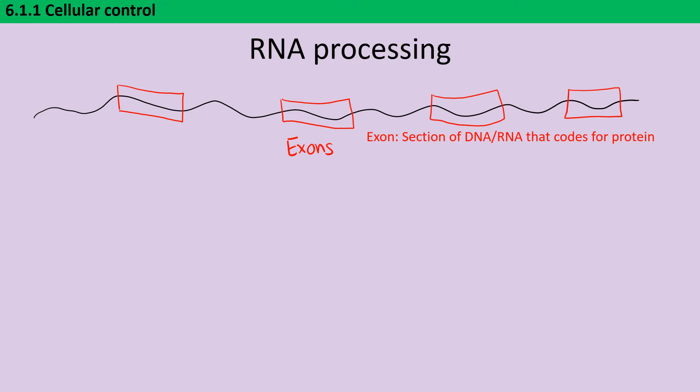And then in between these are introns, and these may be completely junk DNA, but they may also include some promoter regions. And these need to be removed before the mRNA can be translated to make protein.